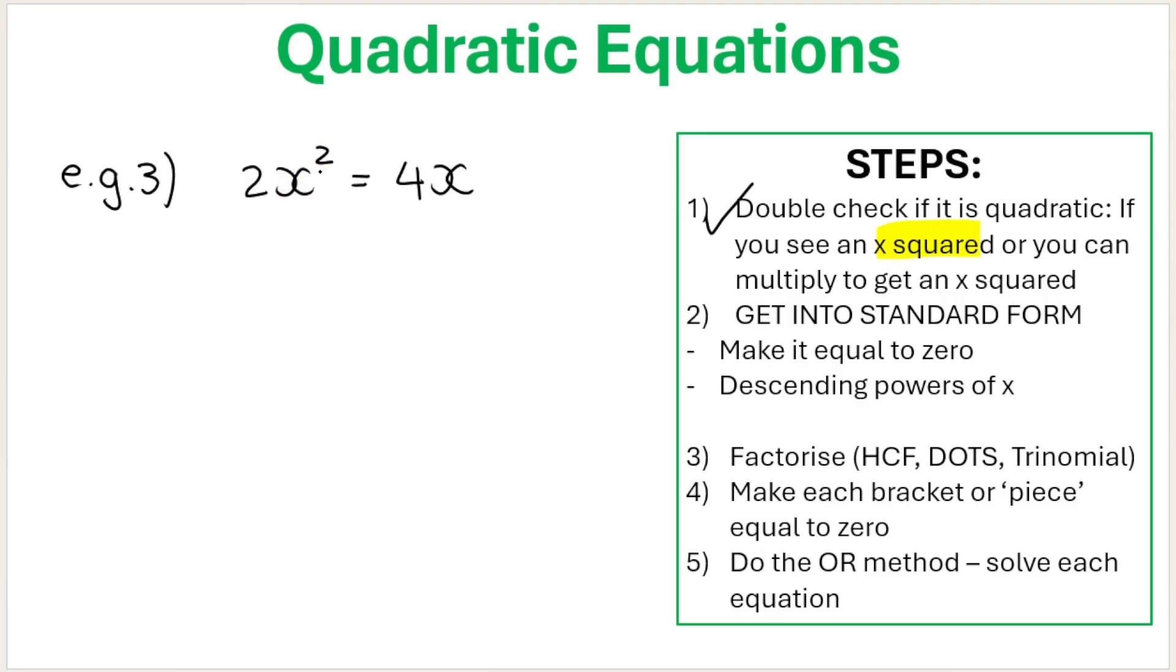Get into standard form. Remember, this means you must make the equation equal to 0. So 2x squared, the opposite of plus 4x is subtracting 4x. If you subtract 4x on both sides, you've now made the equation equal to 0. That's standard form. And descending powers of x just means put x squared first and then x to the power of 1 next after that.